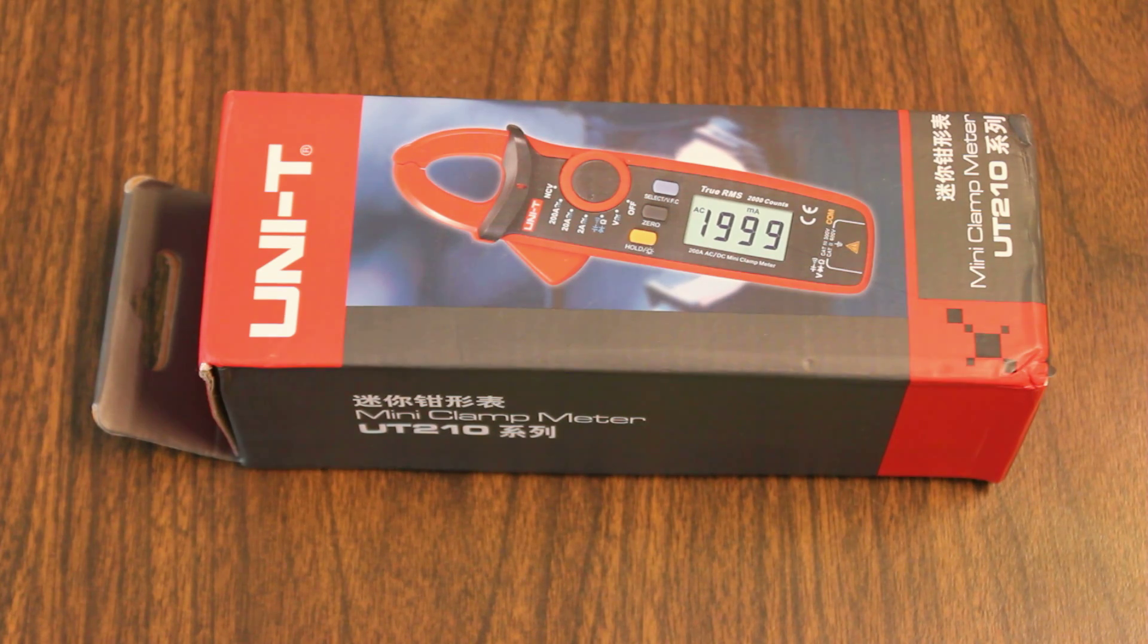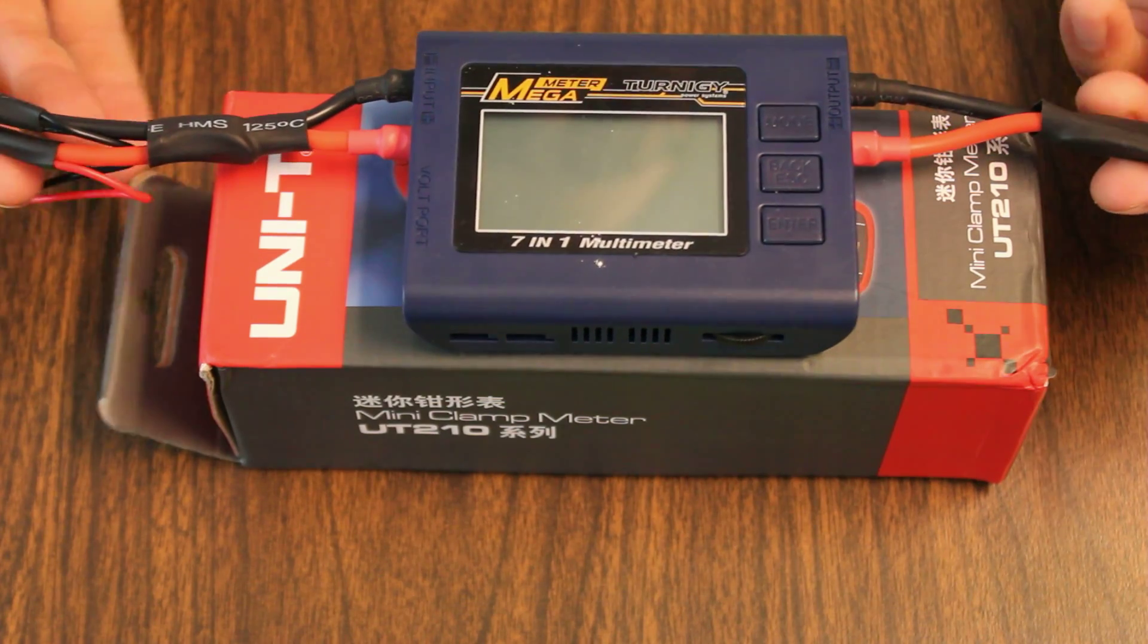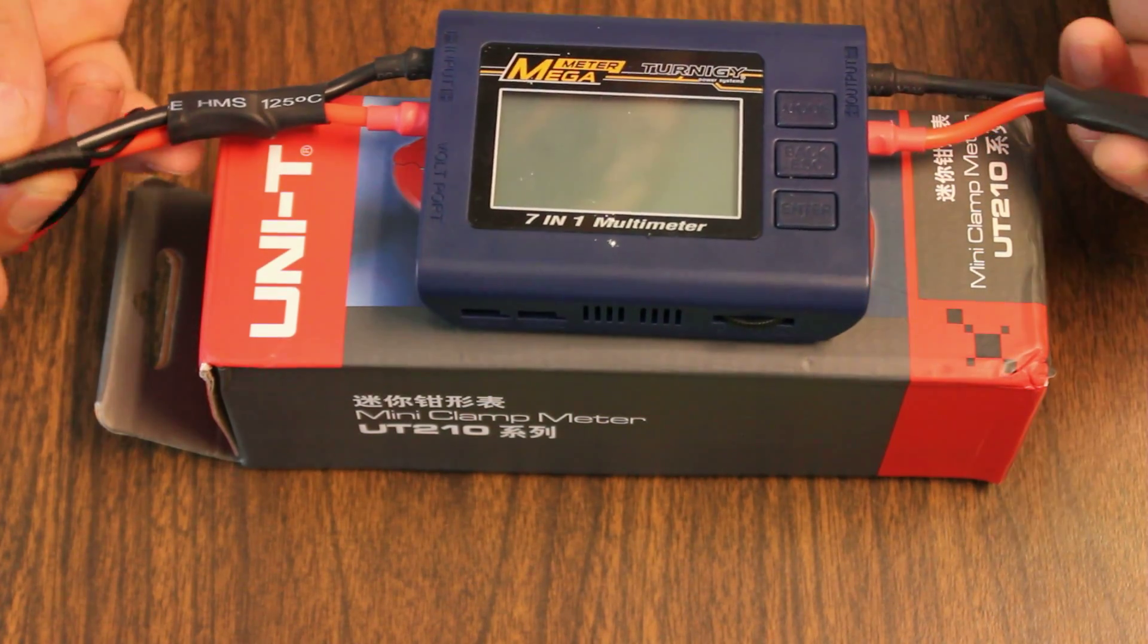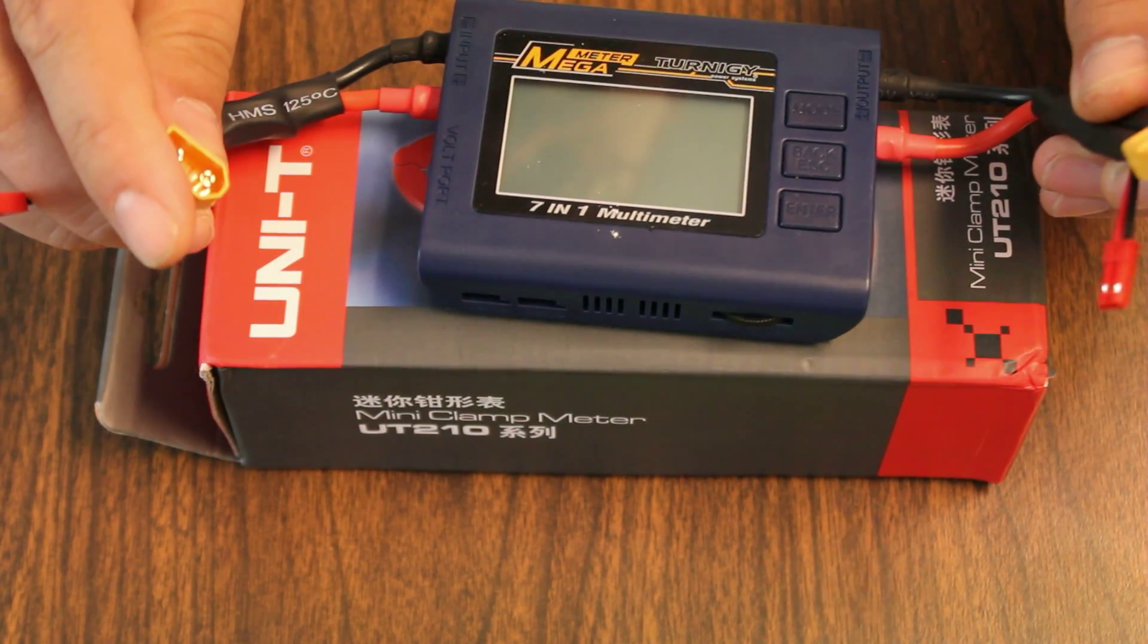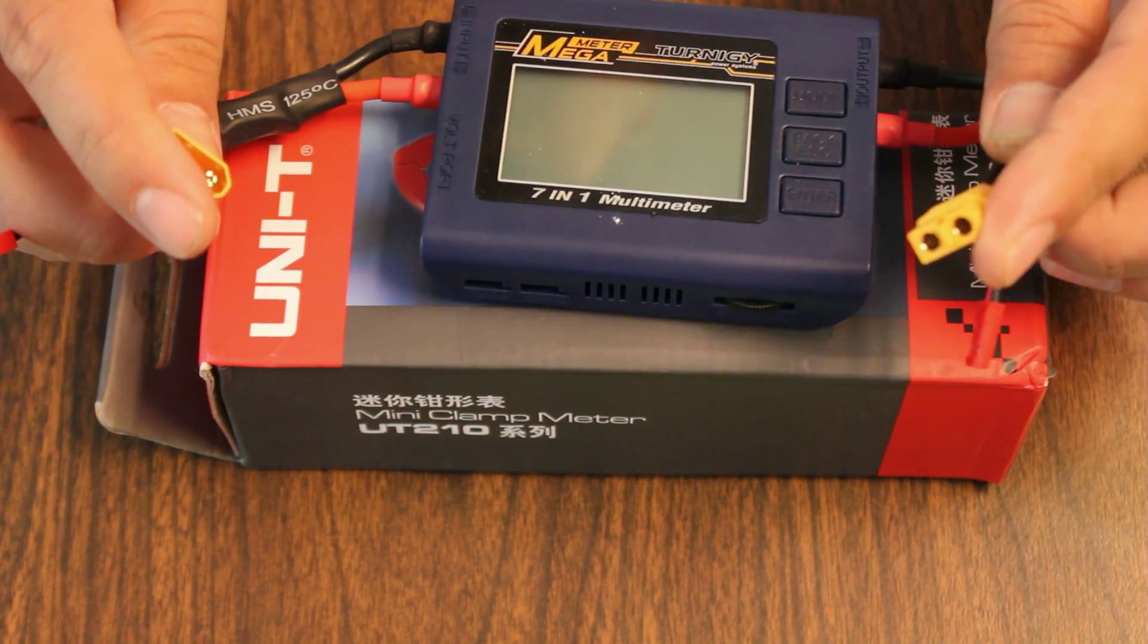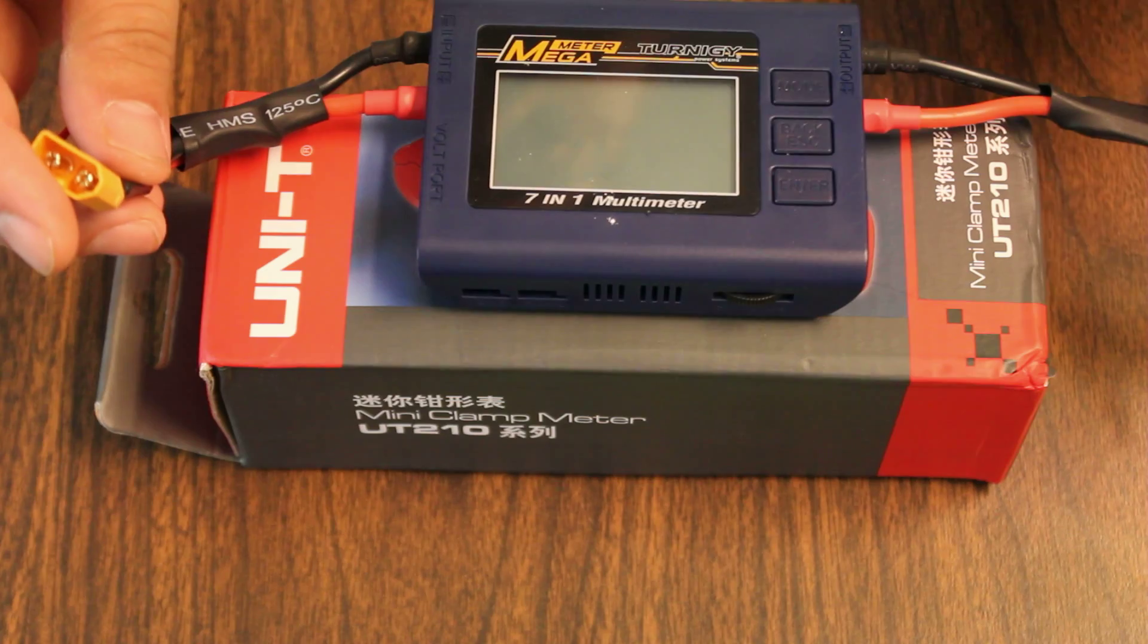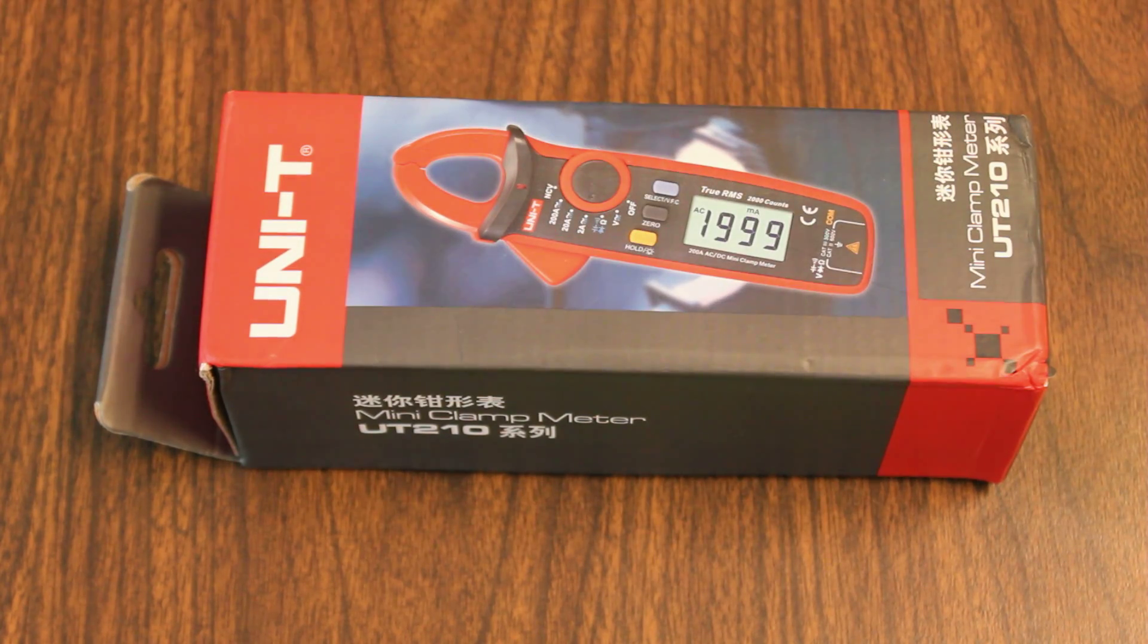Normally, if you want to measure current, you need to have something that goes in line with the load. Something like this. This is the Turnigy 7-in-1 megameter. You plug your battery in one end, you plug your copter or plane in the other end, or whatever else is drawing your load, and the current flows through it, and it measures what your current draw is. That can be annoying if you're in a situation where you can't easily get something like that in line. Like something is soldered up, and so you can't easily disconnect it.